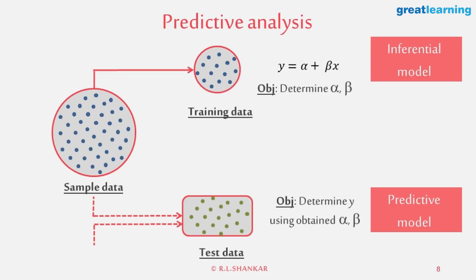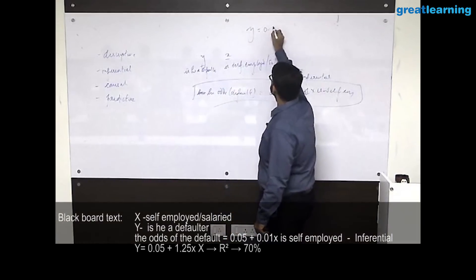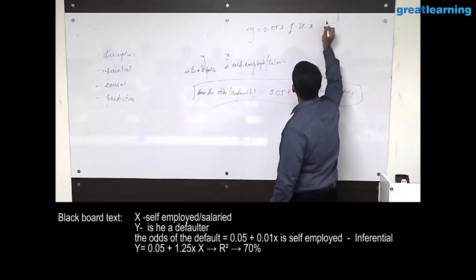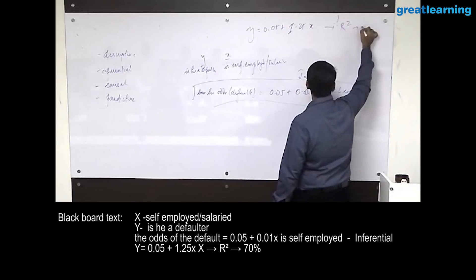I take the same model and use it for predicting some data. How do I determine if the model is doing well in the predictive sense? I build a model - let's say Y equals 0.05 plus 1.25 times X. And this is the best model that gives an R squared of 70%. This is on the inferential side.